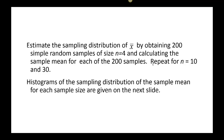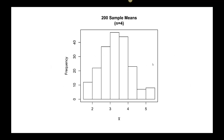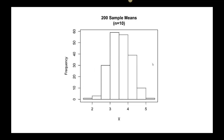We want to see what the distribution looks like. With 4 rolls of the die repeated 200 times, notice the distribution is no longer uniform — it is starting to appear like an approximately normal distribution. When we rolled the die 10 times per sample, again done 200 times, we again have a distribution that is approximately normal, and it is centered around a mean of 3.5, which is the same as the population mean.